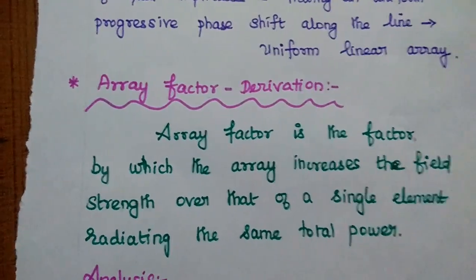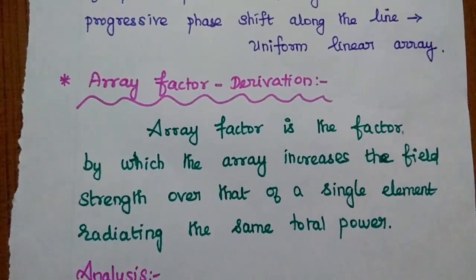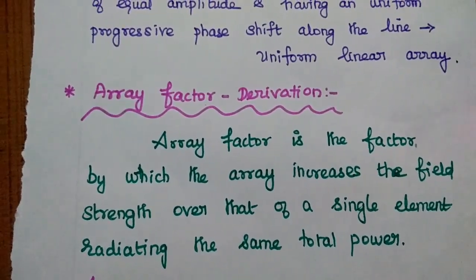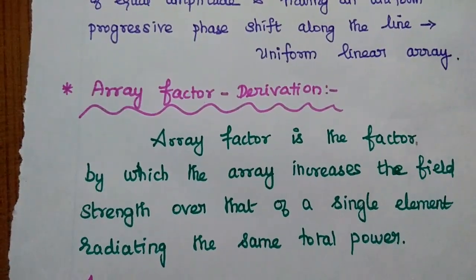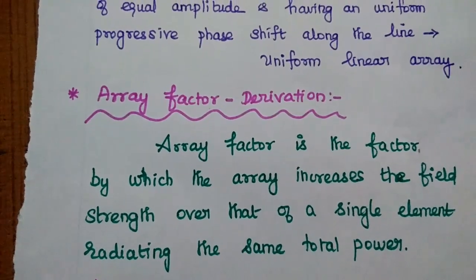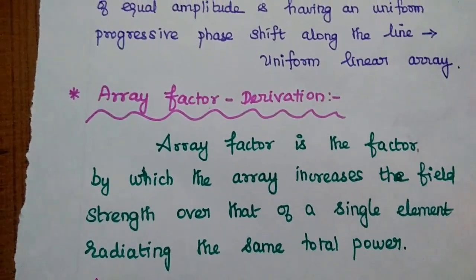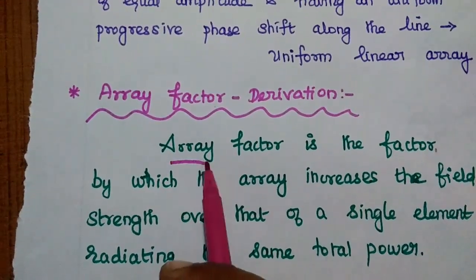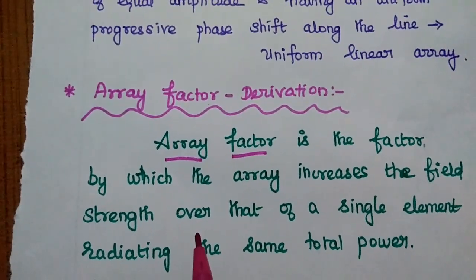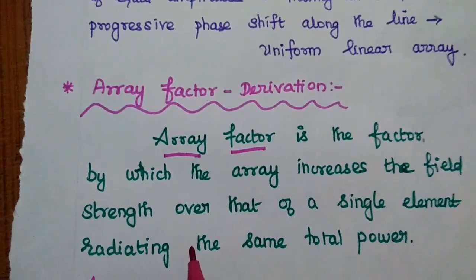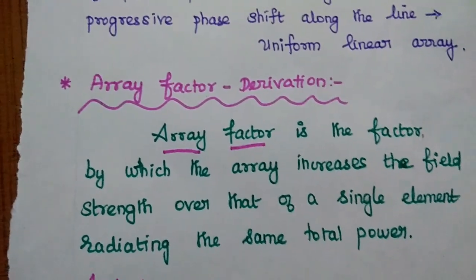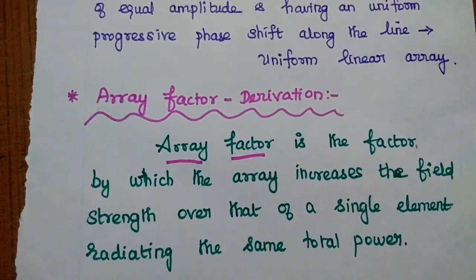Here, N-element means we are considering N number of elements. The array factor is the factor by which the array increases the field strength over that of a single element radiating the same total power. This array factor defines the total electric field strength increased by grouping these elements over a single element — it decides how much signal strength is increased by the array.